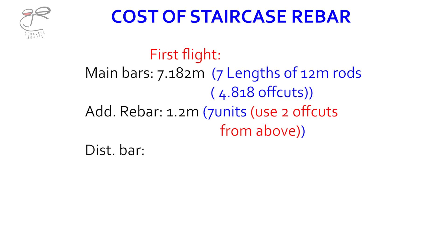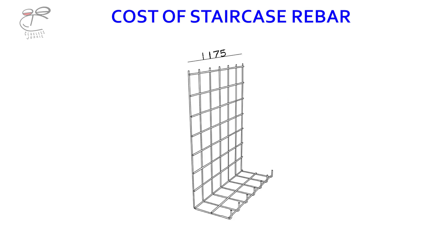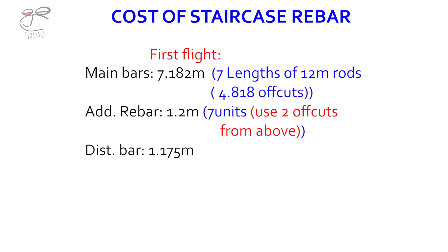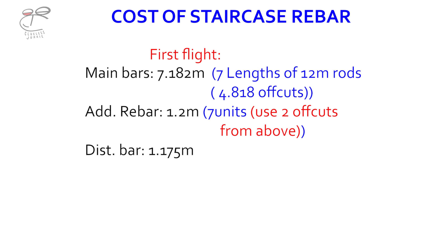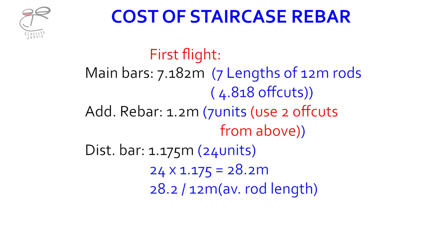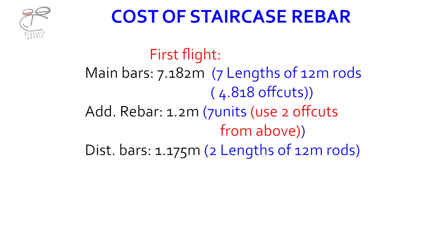Then we'll do the distribution bars. How many distribution bars are on the first flight? Each distribution bar is about 1.175 meters and there are 24 units in the first flight. 24 multiplied by 1.175 gives 28.2 meters. Dividing 28.2 by the 12-meter rod length gives us two lengths of 12-meter rod.